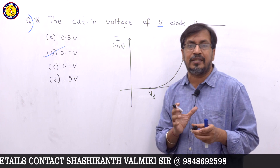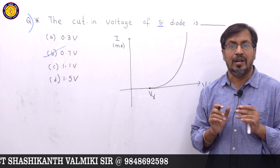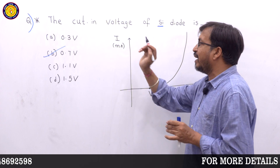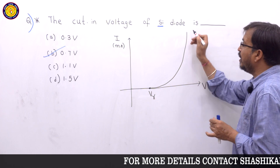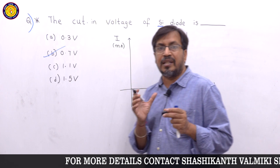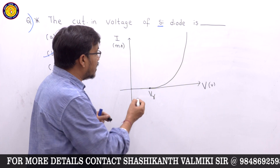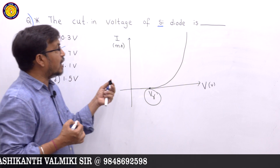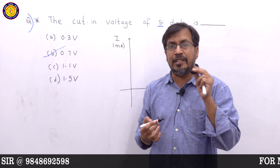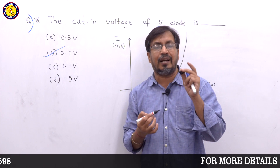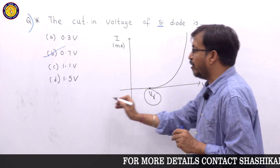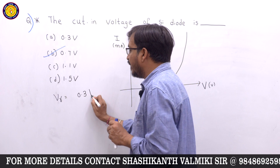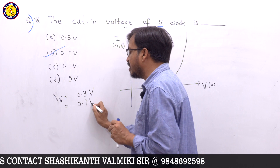Cutting voltage is the minimum forward biasing voltage at which the forward current exponentially increases. We have two semiconductors in a PN junction diode: germanium and silicon. The cutting voltage of a germanium diode is 0.3 volts, and the cutting voltage of a silicon diode is 0.7 volts.